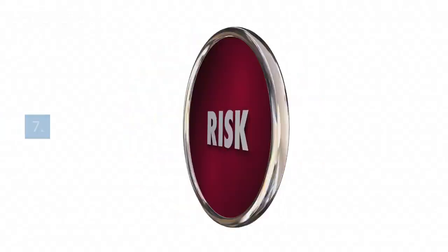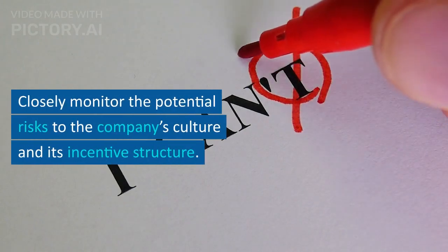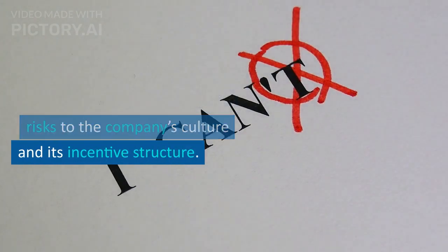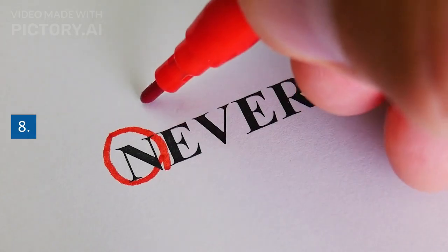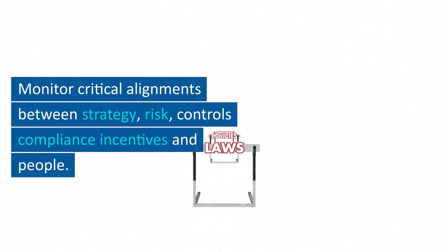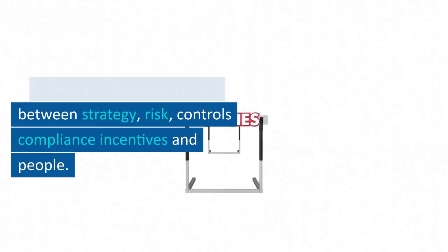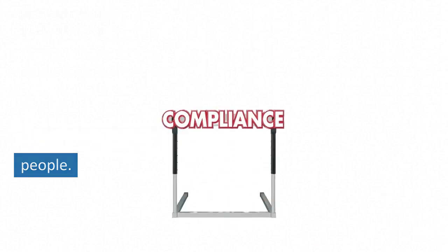Principle 7: Closely monitor the potential risks to the company's culture and its incentive structure. Principle 8: Monitor critical alignments between strategy, risk, controls, compliance incentives, and people.